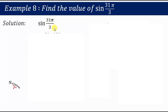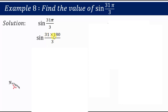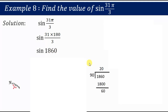Sine 31π/3 can also be written as sine(31 × 180 / 3), since π = 180°. So 31 × 180 / 3 = 1860. Now you need to divide this number by 90.